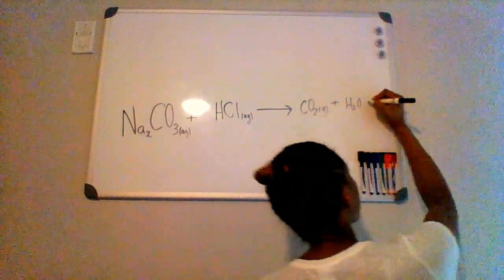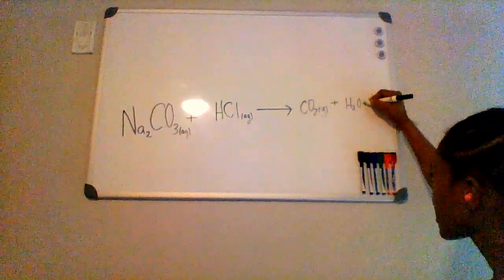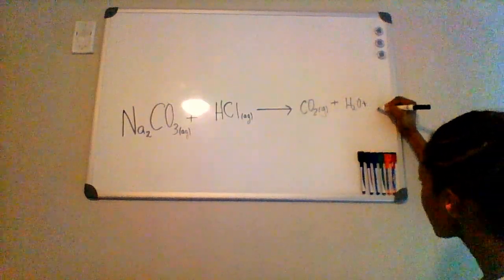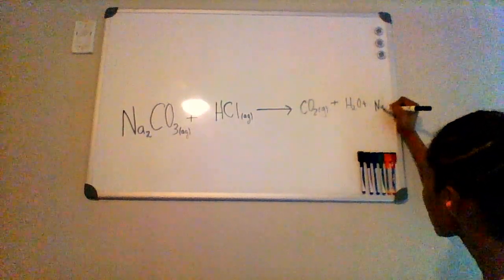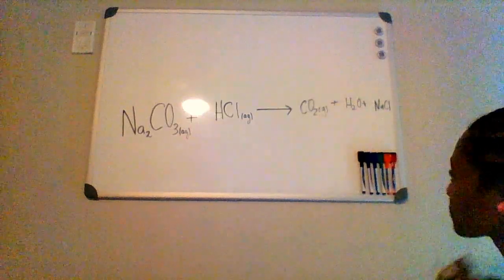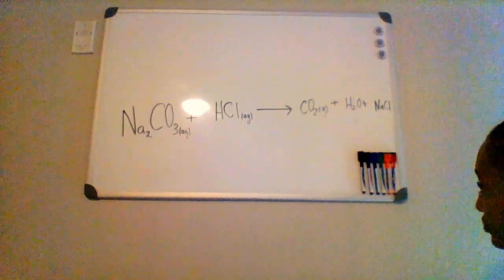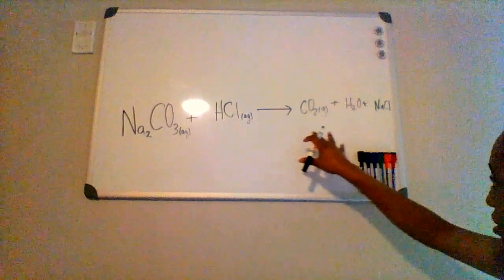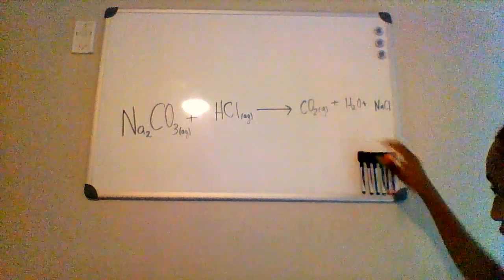and then we're also going to have some table salt and NaCl in the mix. All right, so these are the species that are generated on the product side.